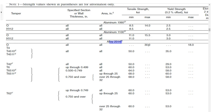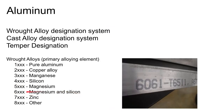Looking at the mechanical property limits table, for alloy 1060 with an O (annealed) temper the tensile strength is 8.5 ksi. Dropping down to alloy 2014 with a T6511 temper, tensile strength can reach 68 ksi — a huge difference. This is actually higher tensile strength than some steels. So it's not enough to order a certain alloy; the temper designation must go along with it.